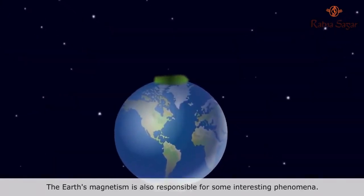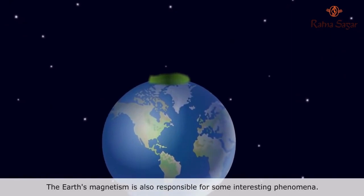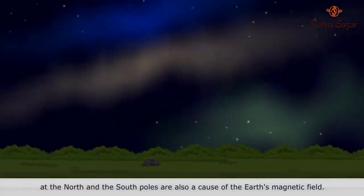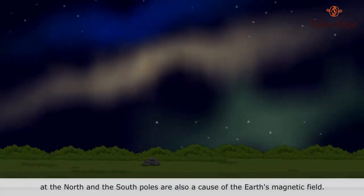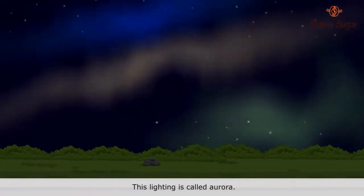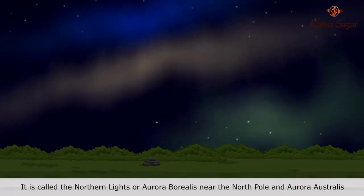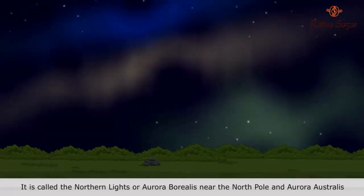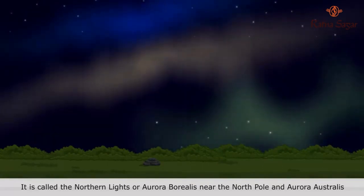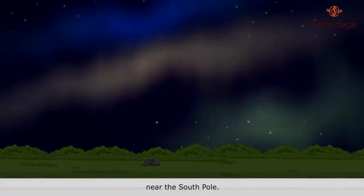The Earth's magnetism is also responsible for some interesting phenomena. The incredible natural light display at the North and the South poles are also a cause of the Earth's magnetic field. This lighting is called Aurora. It is called the Northern Lights or Aurora Borealis near the North Pole and Aurora Australis near the South Pole.